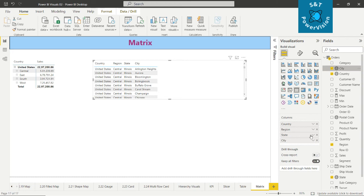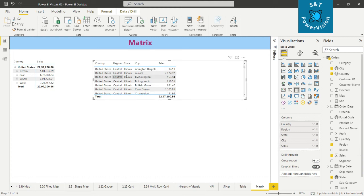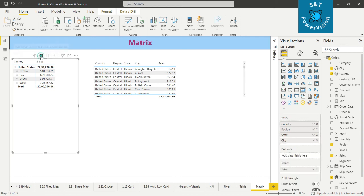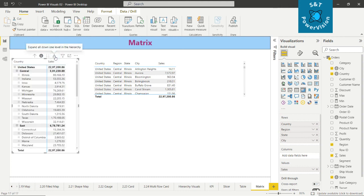Here, we don't have the drill-up and drill-down option. But if you talk about the matrix, we have the drill-up and drill-down option. So first, click to turn on drill-down. Now if you click on expand all down one level in the hierarchy, we can do it like that. If you want, we can see the data city-wise, like Indiana, like that.